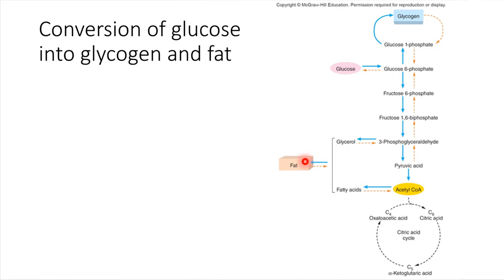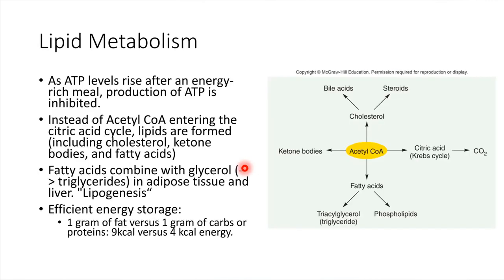Really neat conversions can take place there. Why would the cell want to do that? Fat is another way to store energy — this would take place if the cell did not need ATP in the moment, but wanted to save some of this energy for reserves. Specifically, this pathway of making lipids gets initiated as ATP levels rise.